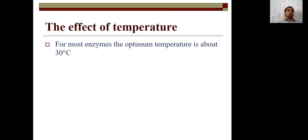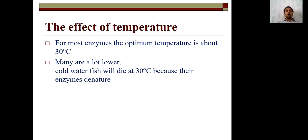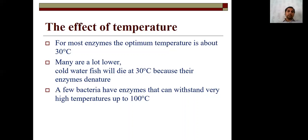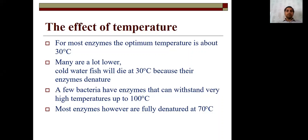Temperature also affects enzyme activity. For most enzymes, the optimum temperature is about 30 degrees Celsius. Cold water fish die at 30 degrees Celsius because their enzymes denature at that temperature. A few bacteria, however, can withstand very high temperatures up to 100 degrees Celsius. Most enzymes are fully denatured above 30 degrees Celsius, and any organism dies due to denaturation of enzymes at high temperature.